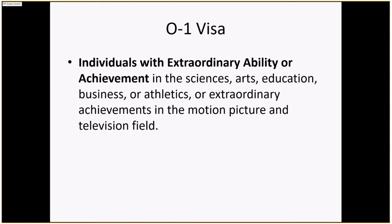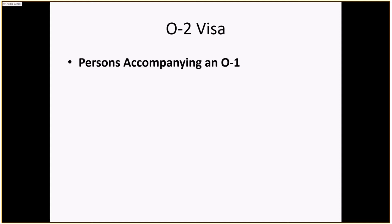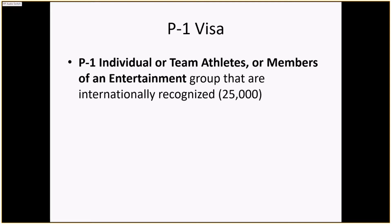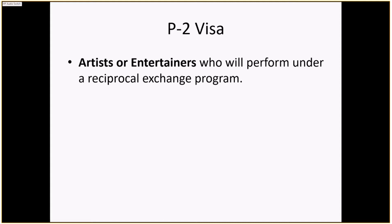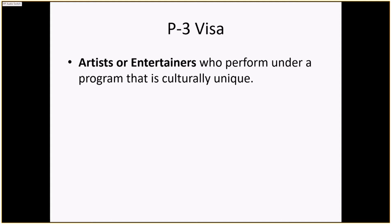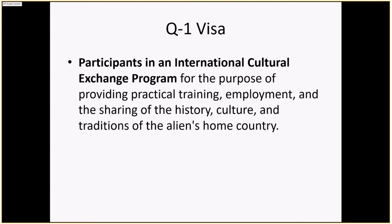The O1 visa is for individuals with extraordinary ability or achievement in sciences, arts, education, business, athletics, or in the motion picture and television field — this is how actors, athletes, and reportedly Melania Trump entered the country. The O2 visa accompanies the O1, generally for their spouse and children. P1 visas are for individual or team athletes or entertainment group members who are internationally recognized. P2 covers artists or entertainers performing under a reciprocal exchange program. P3 covers culturally unique performers. Q1 visas are for participants in international cultural exchange programs.